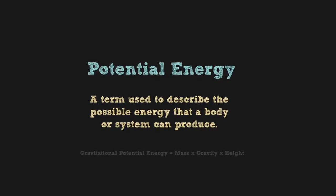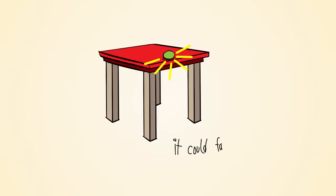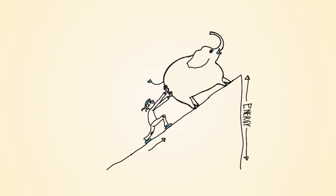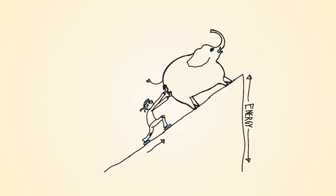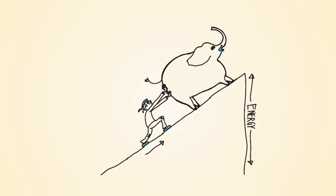There are many different ways to store potential energy. One easy way is gravitational potential energy — energy can be stored in an object by elevating it. If we push a heavy box up a slope, we know we did work, but much of the energy we put into moving the box was converted into gravitational potential energy, or the energy an object has from being elevated from one state relative to another.